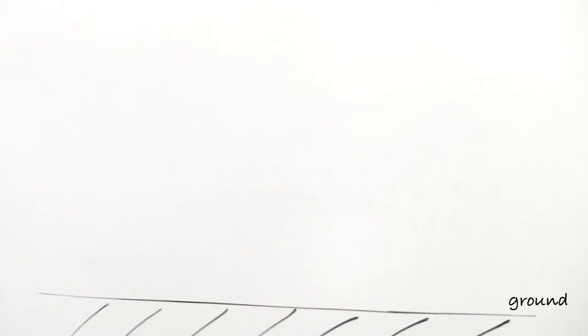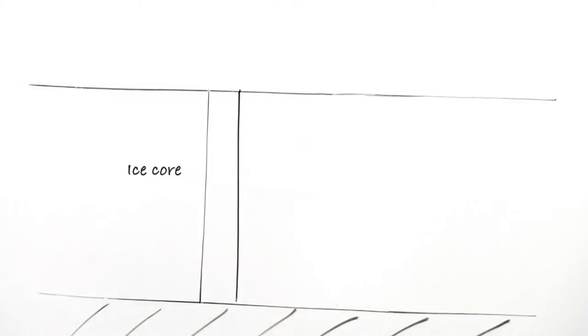In places like Antarctica, snow has been accumulating for hundreds of thousands of years. At the top of the Antarctic ice sheet is the newest formed ice and therefore the most recently trapped atmosphere.